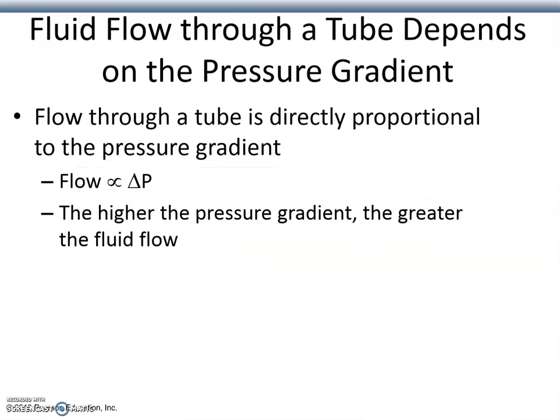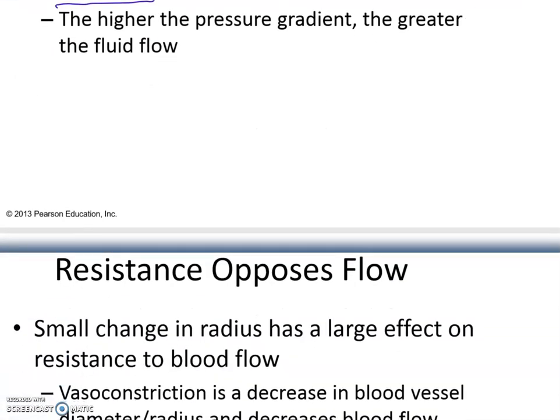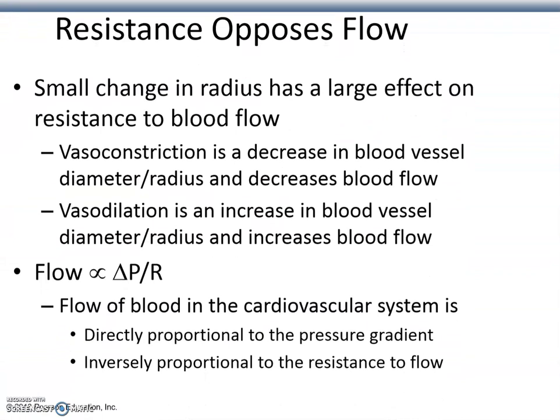The amount of flow of a fluid like blood through a system of tubes depends on the pressure gradient and the resistance to flow. Flow is proportional to the pressure gradient — the higher the pressure gradient, the greater the fluid flow. Resistance presents the opposition to flow, and it depends on blood vessel diameter.